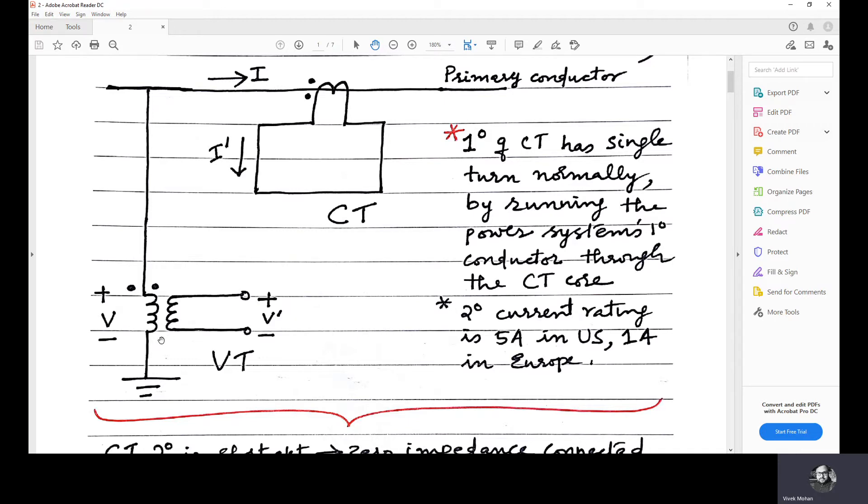Now, we assume for voltage transformers that the secondary number of turns are very small compared to the primary number of turns. So ideally, we assume that the secondary number of turns is 1 and if the primary number of turns is N, then N by 1 equals V by V dash, in the sense that V dash equals 1 by N into V.